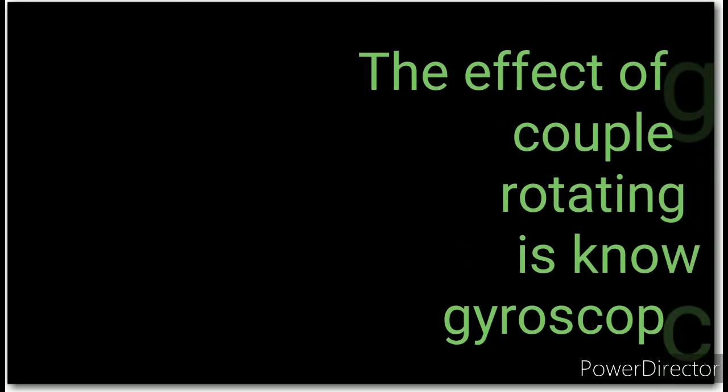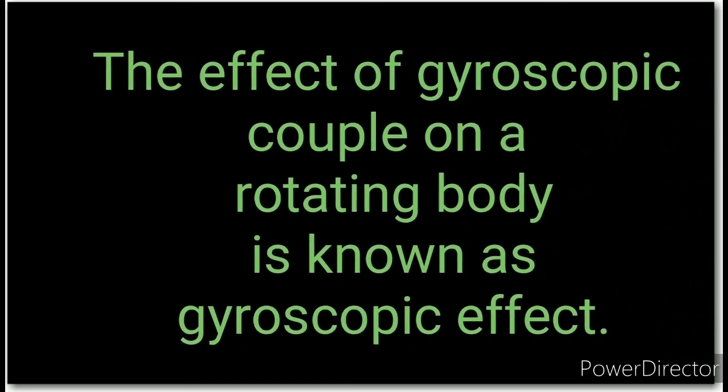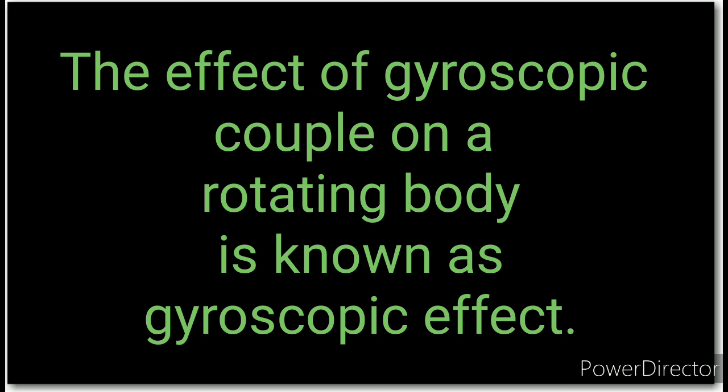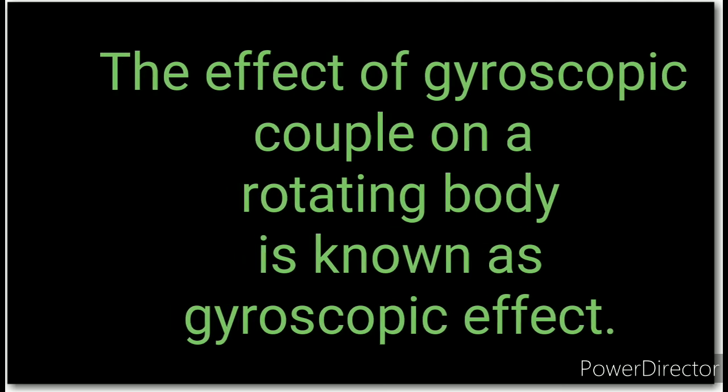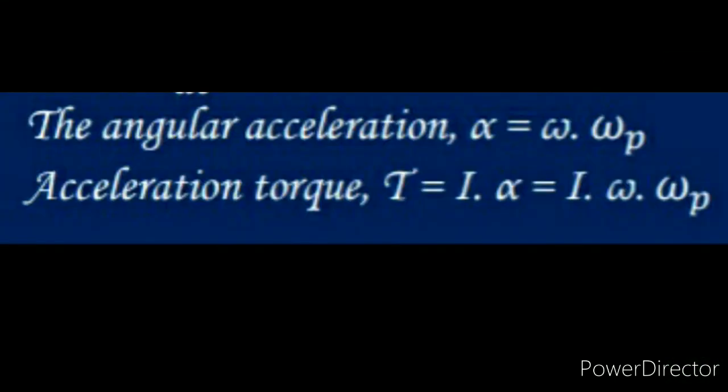The effect of the gyroscopic couple on a rotating body is known as the gyroscopic effect on the body. A gyroscope is a spinning body which is free to move in other directions under the action of external forces. The expression for gyroscopic couple is T = I·ω·ωp. This formula is very important in solving problems.